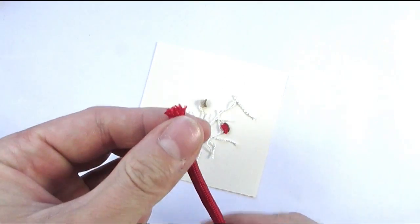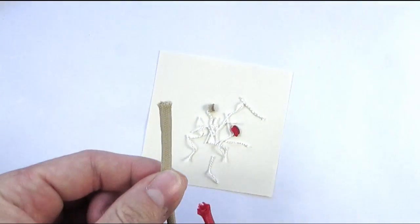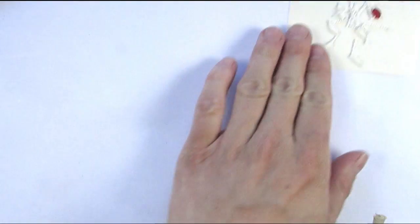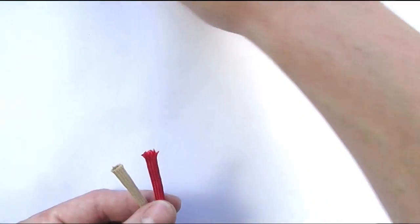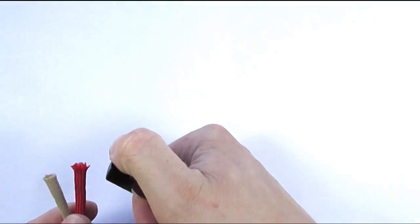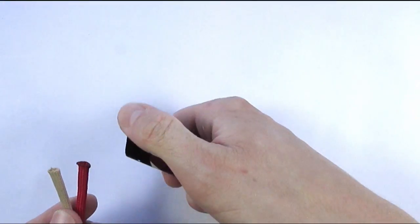Once you've done that, we're going to now melt the ends in order to prevent them from falling apart or fraying. So just take a lighter and lightly burn the ends.